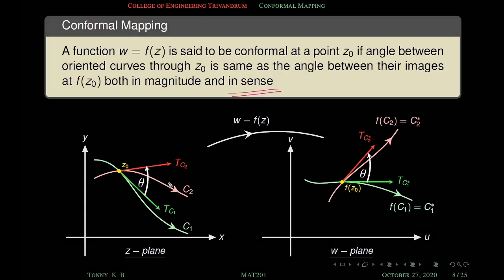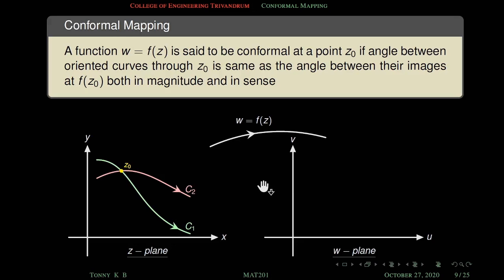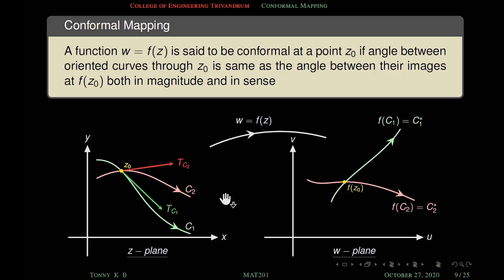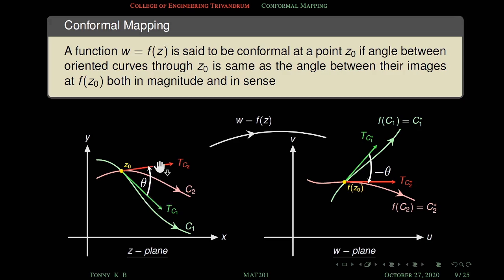If we measure angle θ from c₁ to c₂ in the anticlockwise direction, then same sense means we measure the angle from f(c₁) to f(c₂) also in the anticlockwise direction. For example, consider a case where f(c₁) and f(c₂) are oriented such that the magnitude of the angles is the same, but the sense is different — the original angle is anticlockwise but the image angle is clockwise. So magnitude is preserved but sense is opposite, and therefore that function is not conformal.